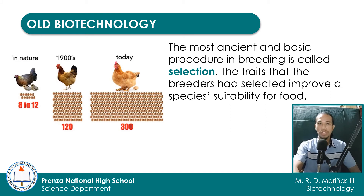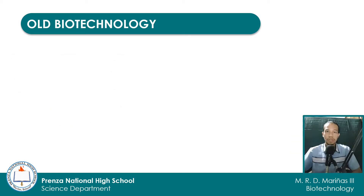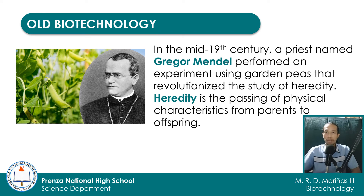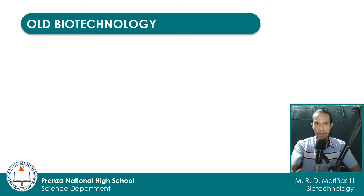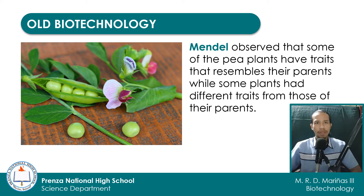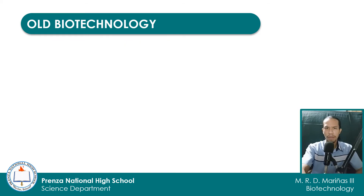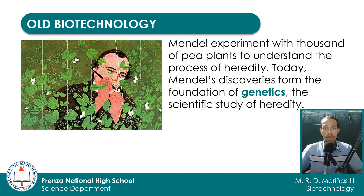As you can see in this picture, we breed chickens for the number of eggs they lay, meat, and even the length of maturation before they are ready for selling. The process of domestication and breeding were further intensified during the mid-19th century when a priest named Gregor Johann Mendel performed an experiment using garden peas. His experiment revolutionized the study of heredity — the passing of physical characteristics from parents to offspring. Mendel observed that some pea plants have traits that resemble their parents, while some have different traits. He experimented with thousands of pea plants to understand heredity. Today, Mendel's discoveries formed the foundation of genetics, the scientific study of heredity, and with that, Mendel is now known as the father of genetics.